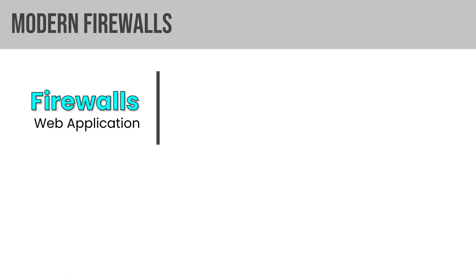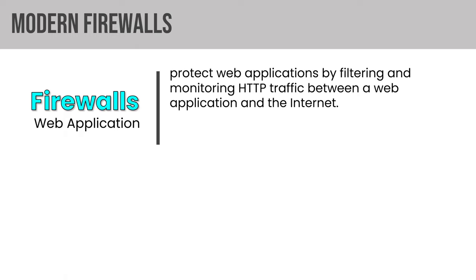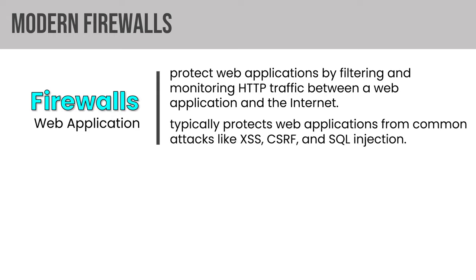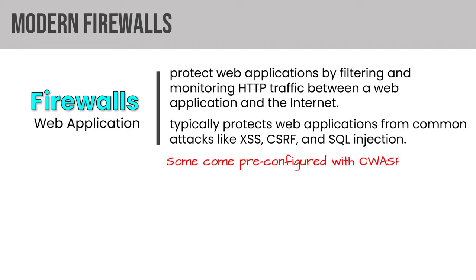Let's talk firewalls. When we think about modern firewalls, there's the web application firewall, which protects web applications by filtering and monitoring traffic between a web application and the internet. It typically protects web apps from common attacks like cross-site scripting, cross-site request forgery, and SQL injection. Many of your web app firewalls will come with pre-configured OWASP rule sets that protect against the OWASP Top 10 application vulnerabilities. And then there are next-generation firewalls — deep packet inspection firewalls that move beyond port protocol inspection and blocking. They add application-level intrusion prevention, and they bring intelligence from outside the firewall, often in the form of consuming threat intelligence feeds. For the exam, know the abbreviations: WAF for web app firewall, and NGFW for next-gen firewalls.